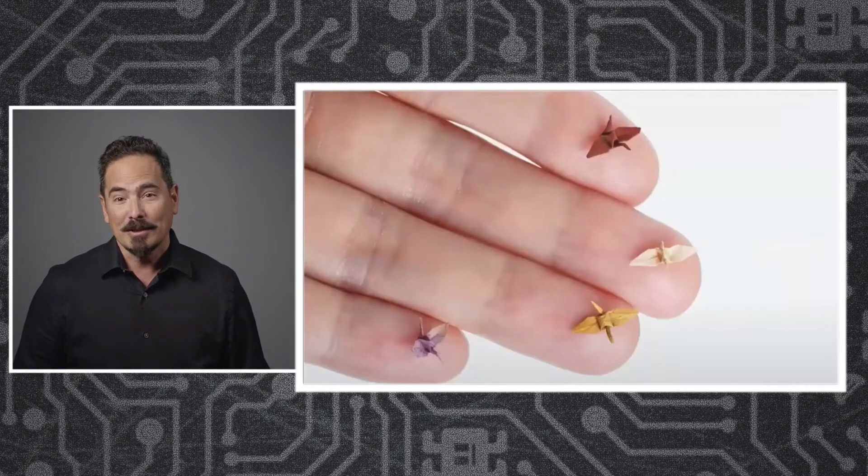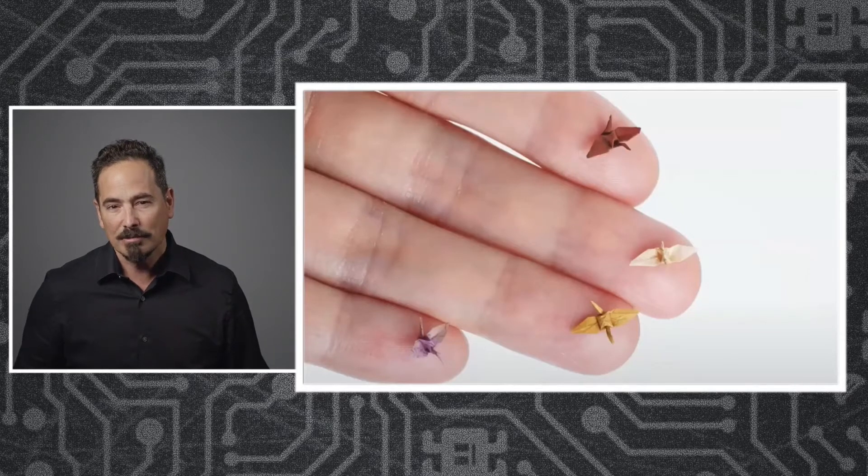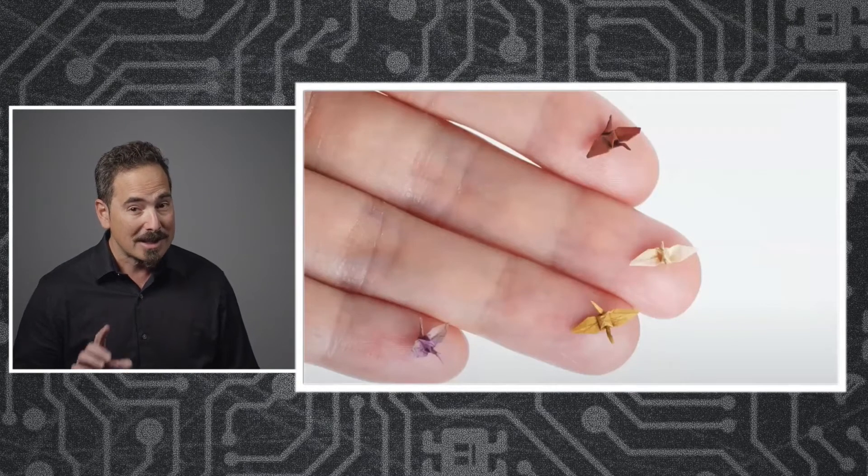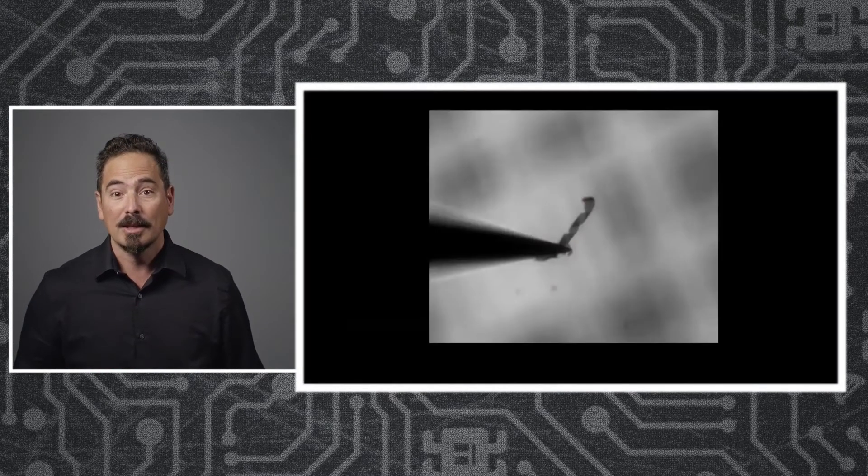If you're going to be making origami at the microscale, there's really two strategies. One is to shrink the origami artist, and that we still don't know how to do. The second is that you could have the paper fold itself. Here it is. This is a sheet of paper that's only 10 nanometers thin, folding itself.